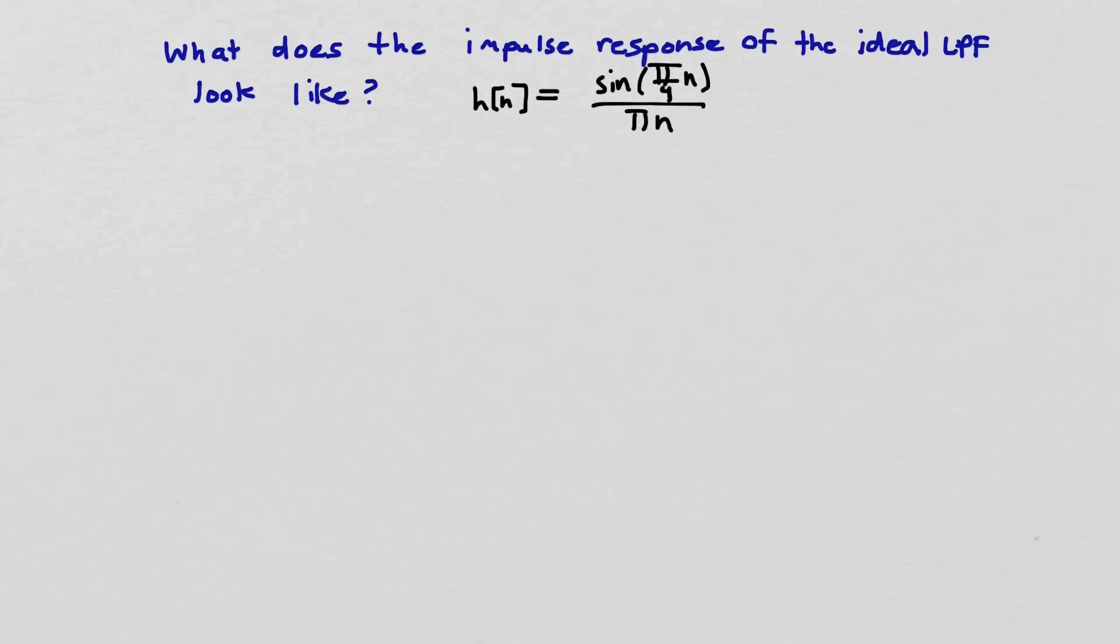On the previous slide we solved for what the impulse response of the ideal discrete-time low-pass filter is, and we came up with this equation here for that impulse response. Now we'd like to say, what does this look like? If we were going to do a sketch of this impulse response, what would it look like?